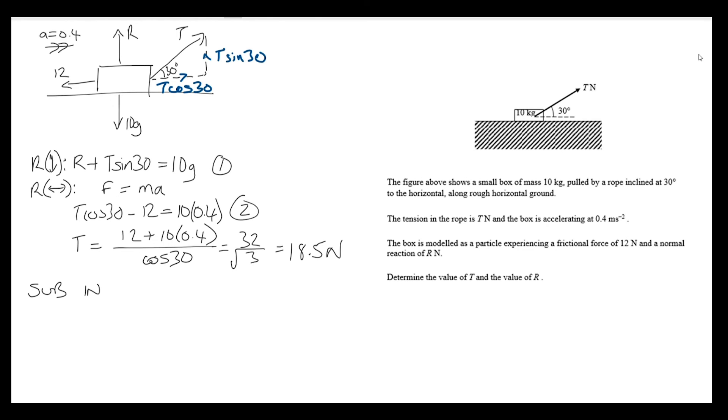I'm going to number these so I can substitute clearly. I'll substitute into equation 1. So r plus t sine 30 equals 10g, and I'll rearrange to make r the subject, then substitute my expression for t before getting to the calculator.